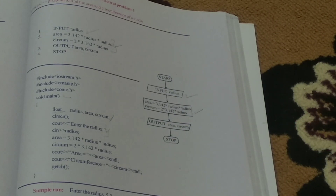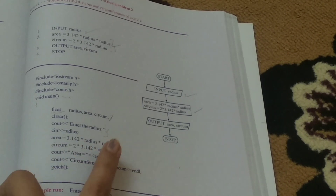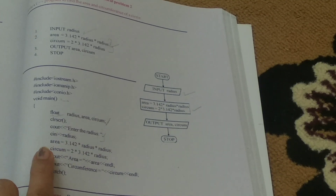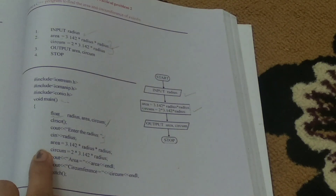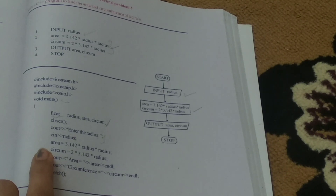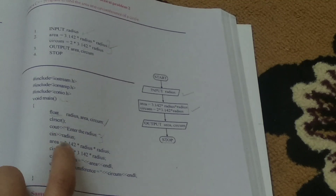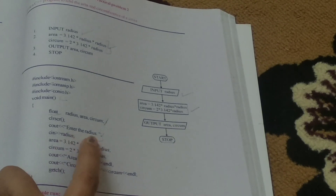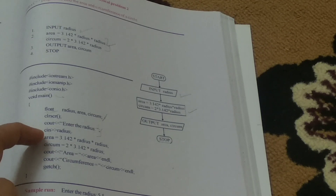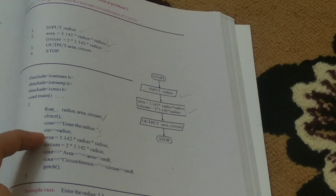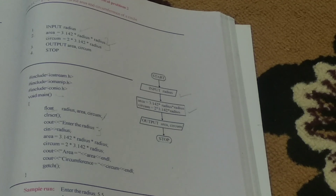Next comes the formula part. Area is equal to 3.14 into radius into radius. Next, circumference is equal to 2 into 3.14 into radius. Whatever value is calculated will be stored in the variable circumference, and similarly the final value of area is stored in the variable area.